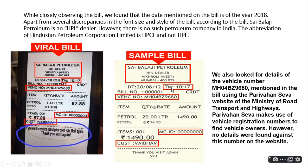Fact-checkers also looked up the vehicle number mentioned in the bill using the Parivahan Seva website of the Ministry of Road, Transport and Highways. Parivahan Seva uses vehicle registration numbers to find vehicle owner details. However, no details were found against this number on the website, confirming it was a fabricated sample bill.